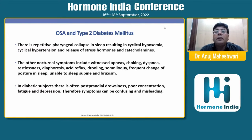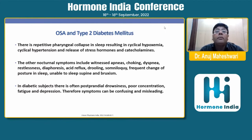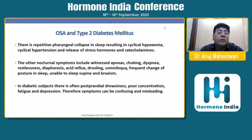Nocturnal symptoms associated with obstructive sleep apnea include apnea, choking, dyspnea, restlessness, diaphoresis or excessive sweating, acid reflux, drooling, somniloquy, frequent changes of posture during sleep, and bruxism. All these symptoms may be associated with obstructive sleep apnea as a result of cyclical hypoxemia. In diabetic subjects, there is often postprandial drowsiness with poor concentration, fatigue and depression — making symptoms confusing and misleading.